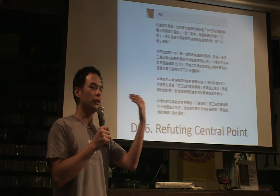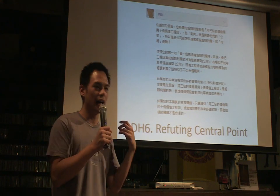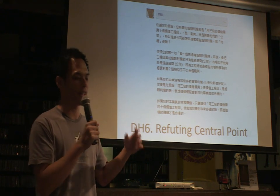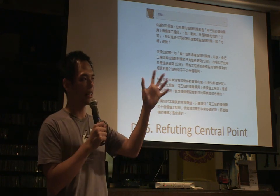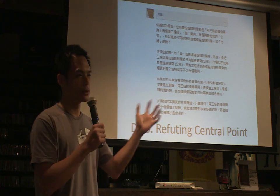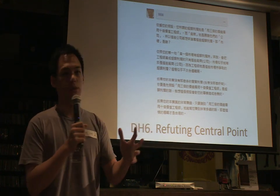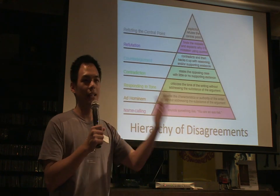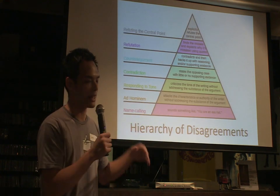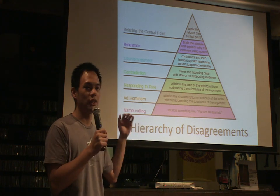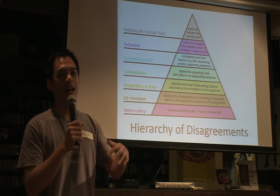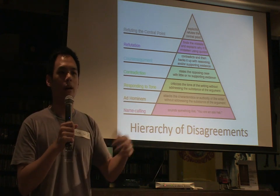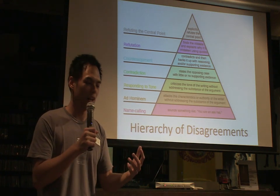Finally, we get to the last level of disagreement, which is called refuting the central point. It usually looks like this: 'Quote, Jamie — I think you said this. This is your main point. I disagree with you, and here's why.' I love this type of comment a lot because it's adding to the conversation. But you seldom see it. So here's the hierarchy of disagreement — I hope from this day on we try to apply this and really disagree well and make each other learn.